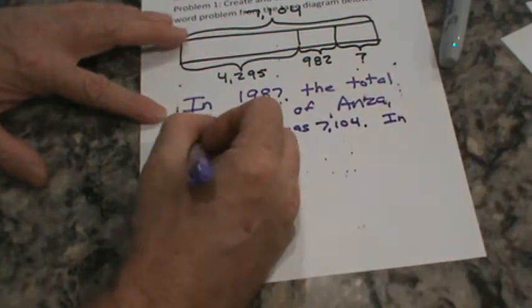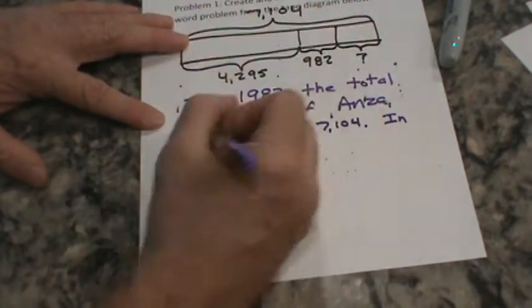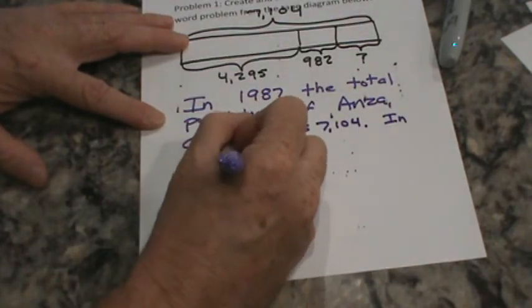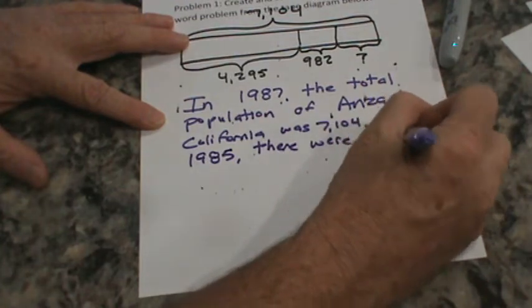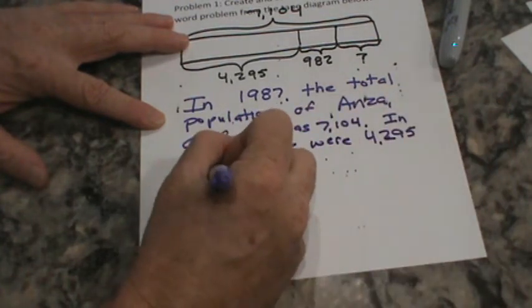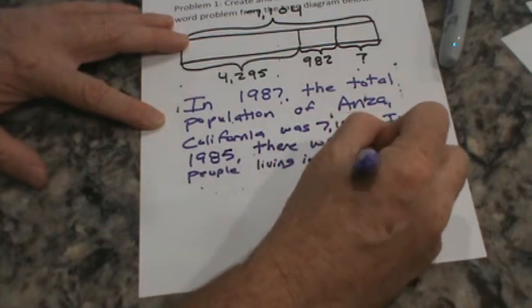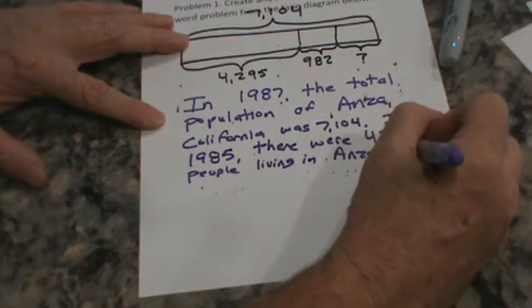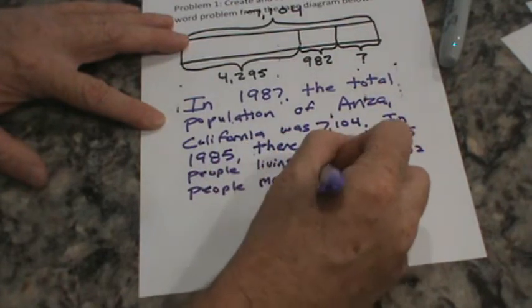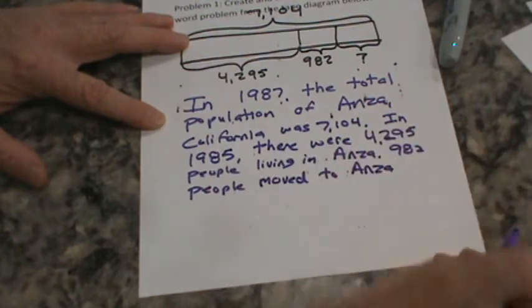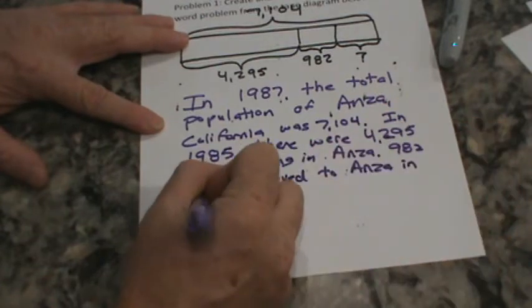So in 1985, there were 4,295 people living in Anza. 982 people moved to Anza in 1986.